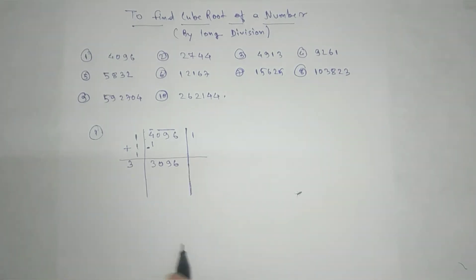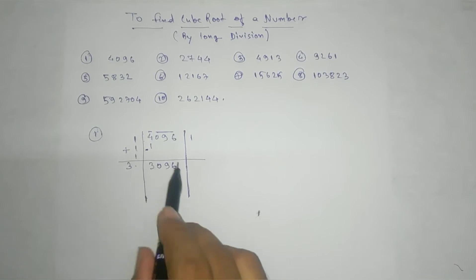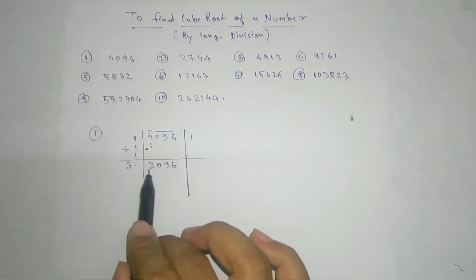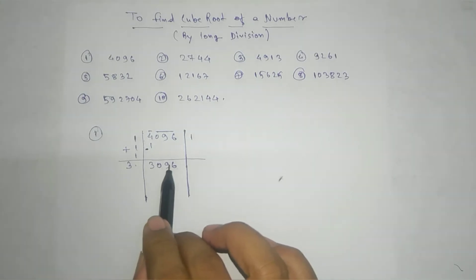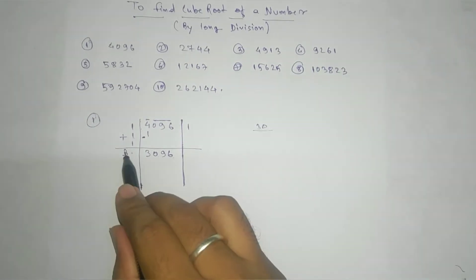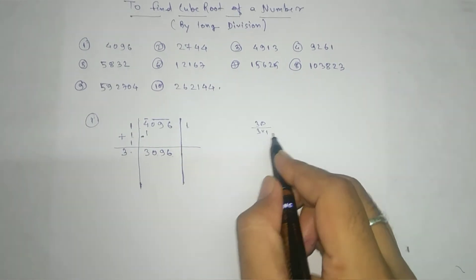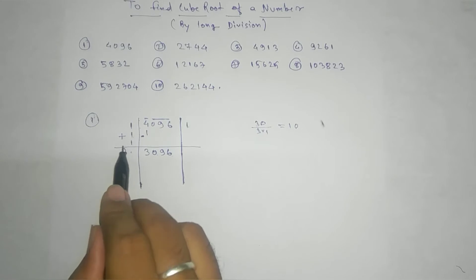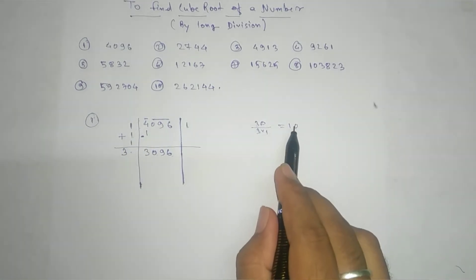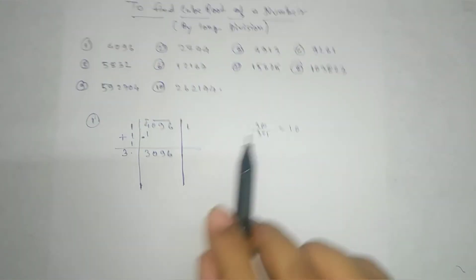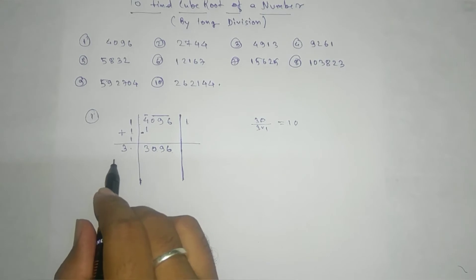This much is quite similar to your square root. Second step: what number are we going to take here? There is a concept which we are going to apply — leaving the two digits from behind, whatever remains we have 30. So that 30 we divide by 3 into 1, and we get 10. The digit should be 1 to 9, not more than that. So your number should be below 10 — that means 9 or less than 9. So by hit and trial, we will take 6.